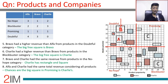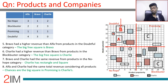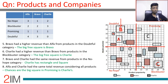Charlie had higher revenue than Bravo from products in the Blockbuster category. Charlie has three products and Bravo has two in Blockbuster. If Bravo had the big square, it would be impossible for Charlie to have more revenue. So Charlie gets the big square in Blockbuster, and Bravo gets the smaller square.